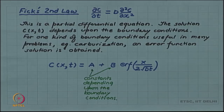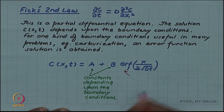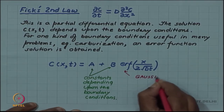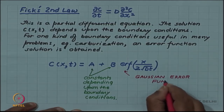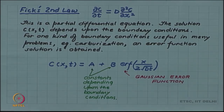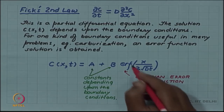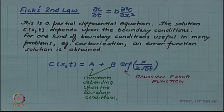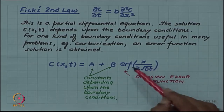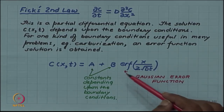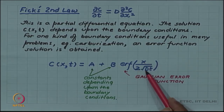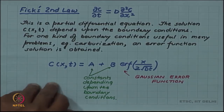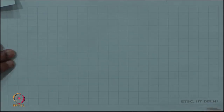This 'erf' is the Gaussian error function. The whole thing inside the bracket is the argument of the Gaussian error function — just like a function such as sin(θ) or cos(θ), which for any given argument θ can be evaluated. Similarly, the error function can be evaluated for its argument, which is x divided by 2 times the square root of Dt, where D is the diffusion coefficient.